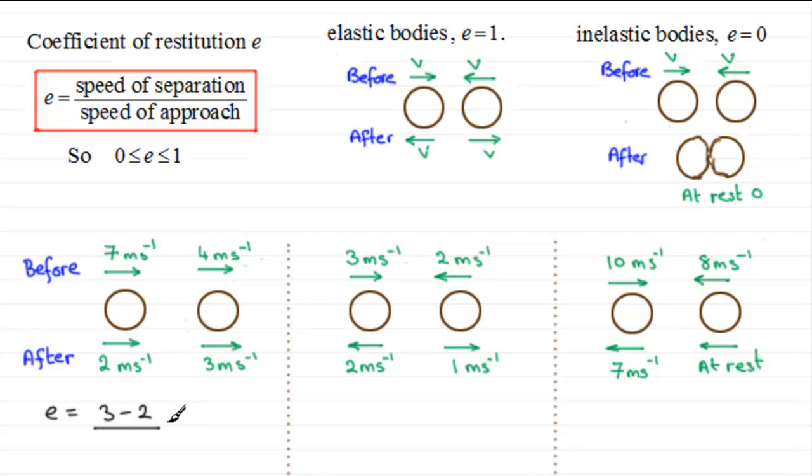Now we need to compare this with the speed of approach, and the approach speeds are here. We can see that this particle is going a lot faster than this one and it's gaining on it at a rate of 3 meters per second. So that's our relative speed of approach, it's the result of doing 7 take away 4. So what we've got here is 1 divided by 3. One third then is the coefficient of restitution, and just check out that it is somewhere between zero and one.